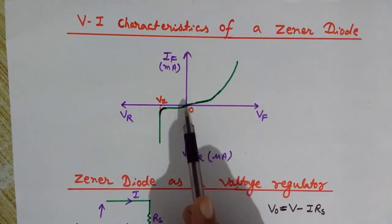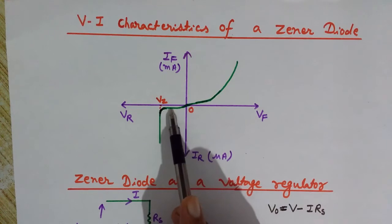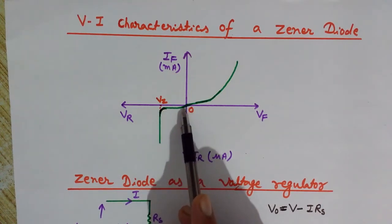Here you can see that we are increasing the reverse voltage but the current is not increasing; it is nearly constant. This is known as the reverse saturation current, the reverse current due to reverse voltage, and it seems like saturated current.